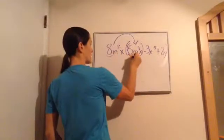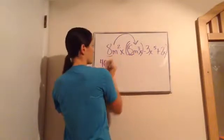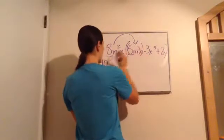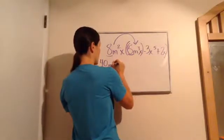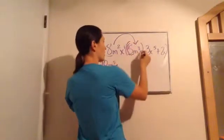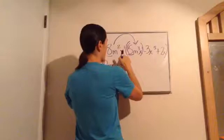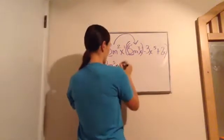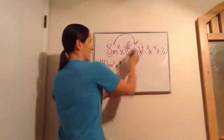So, I'm going to do my numbers. 8 times 5 is 40. And I have m squared times m cubed makes m to the fifth. Then I have x. Remember, you can put a 1. And here we can put a 1. X to the 1 times x to the 1 makes x squared. And now we're done with that one.